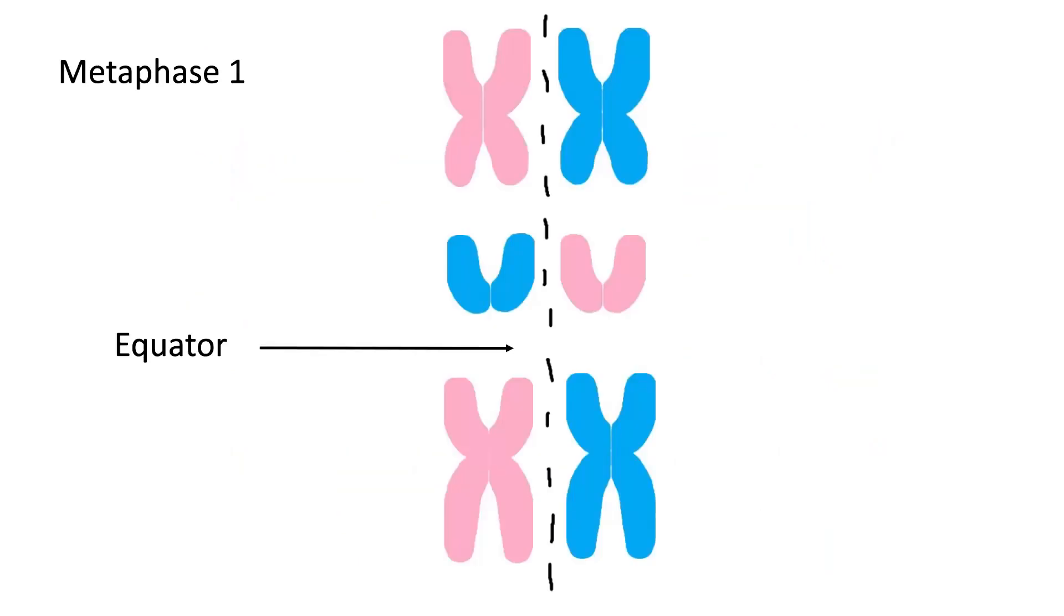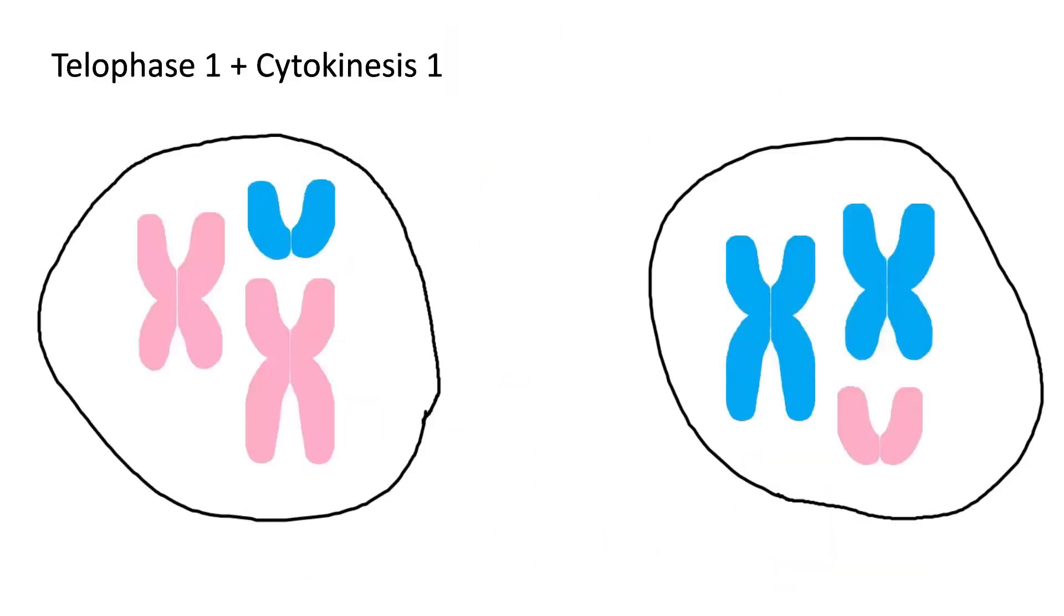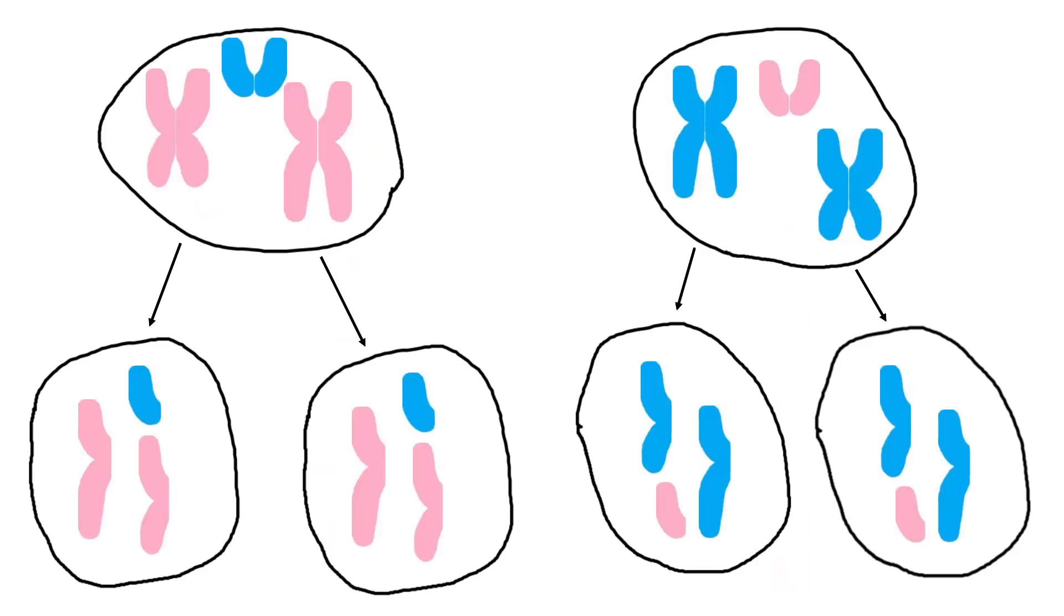In the next stage, metaphase I, the tetrads line up along the equator of the cell. And in anaphase I, the tetrads are pulled apart so one double-stranded chromosome from each pair ends up in each new cell. From there, the two new cells repeat this process, separating the double-stranded chromosomes in a second division to form the final sex cells, called gametes.